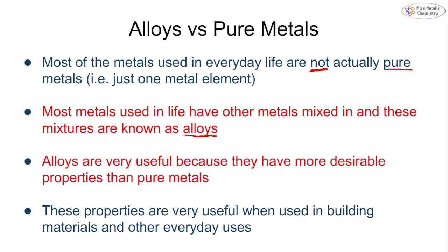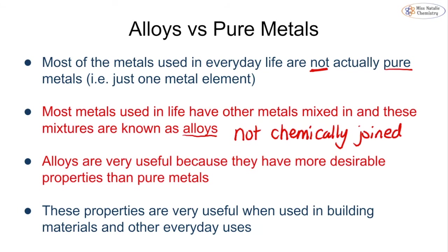Remember, a mixture means that the metals are not chemically joined — they are not bonded together the way you would get in something like magnesium oxide. Instead, the atoms of the different metal elements are mixed in with each other. We'll look at how we draw this out in just a minute.